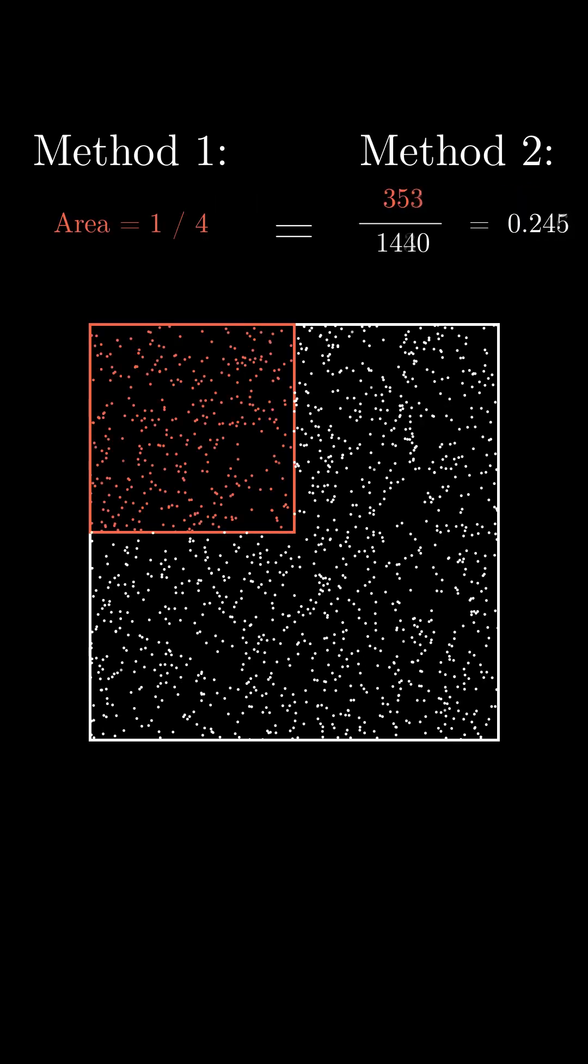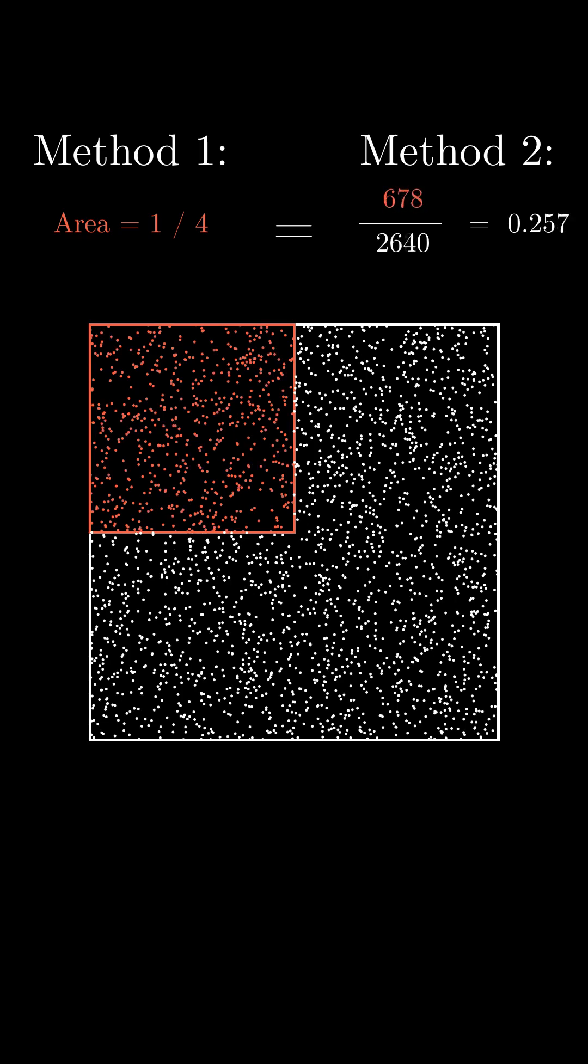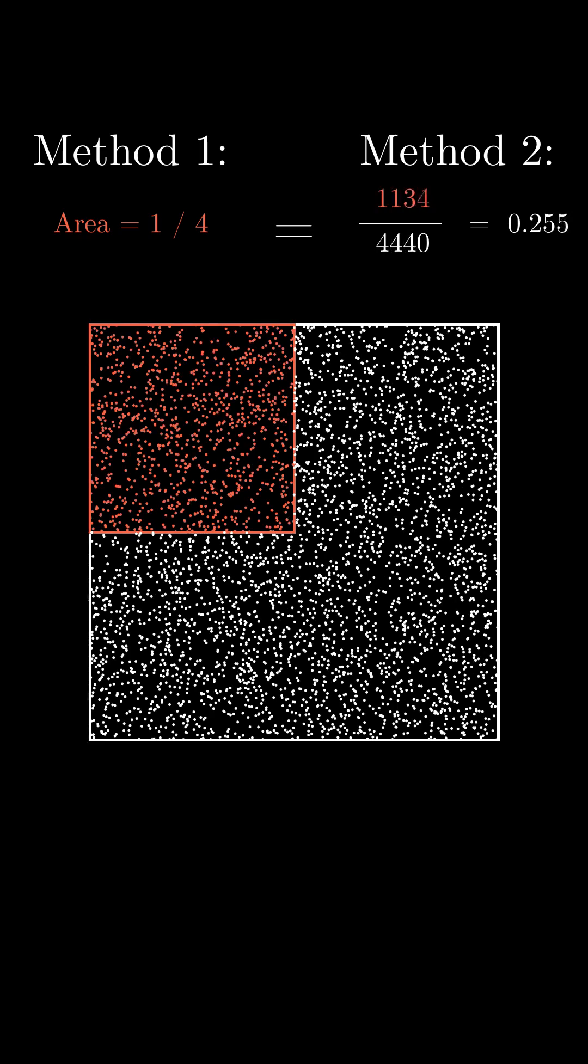So we have two methods: one from the area and the other from throwing random darts. Now imagine a circle inscribed within this unit square.